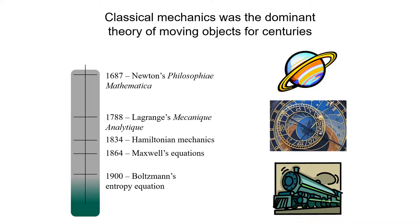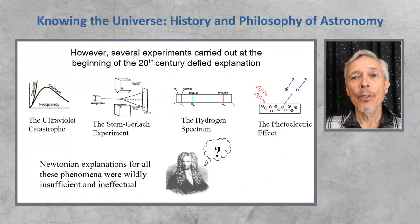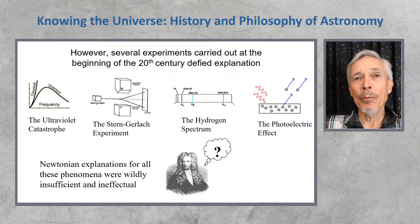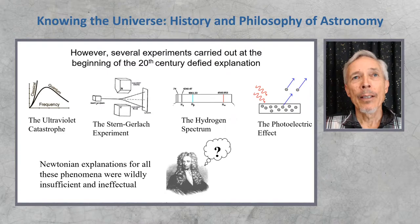But actually, by the beginning of the twentieth century, and late in the nineteenth century, there were experiments being carried out that defied explanation, according to Newtonian physics and Newtonian mechanics. They were, for example, the ultraviolet catastrophe, the Stern-Gerlach experiment, the nature of the hydrogen spectrum, or spectrum of any element, and the photoelectric effect. So we can see here why something had to change.